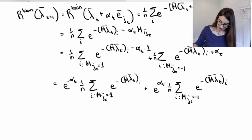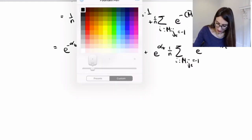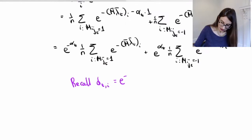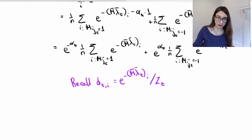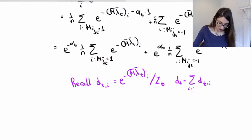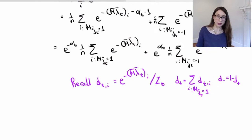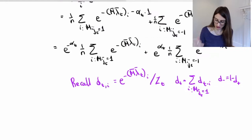Now I want to change notation. Recall that d_{t,i} by definition during the coordinate descent view is defined with Z_t as the normalization factor. We also have d+ being the sum of d_{t,i}'s where m_{i,j_t} = 1, and d− = 1 − d+. Now d− is the critical term here — that's AdaBoost's error rate, the sum of the weights of the misclassified points.